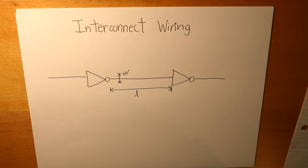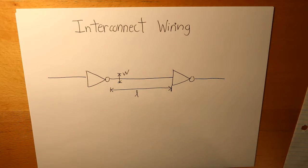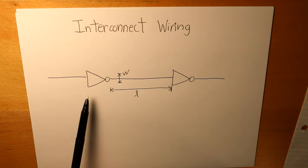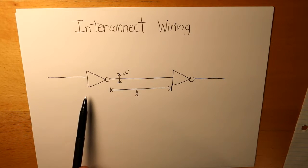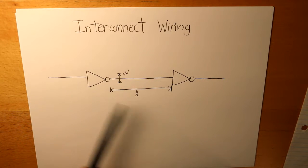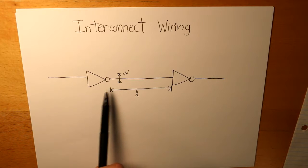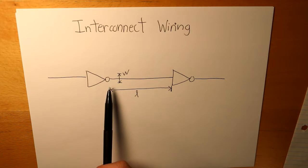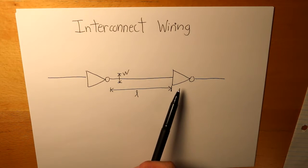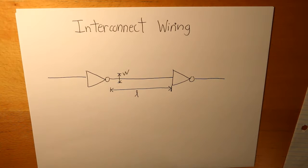Interconnect wiring simply connects two transistors together. In this case, I have a very simple example where we have two inverters, and this inverter's output is connected to the other inverter with a certain wire.